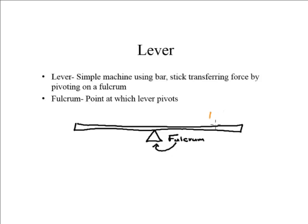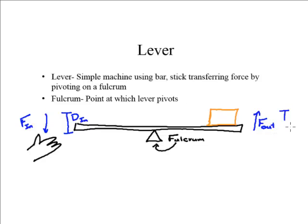If I put a very heavy block on one side, for example, to build the pyramids, and then I apply a force on this side, my hand goes on this side. The amount of force required to push down here is the force in, but the distance that my hand needs to travel is the distance in. What I get out of the lever is a force in this direction, force out, and the distance that the block travels is known as distance out.